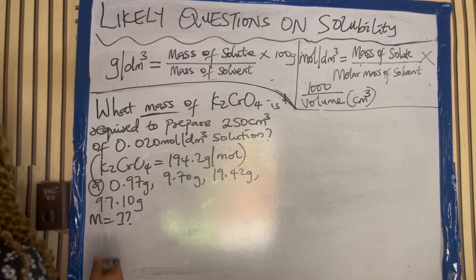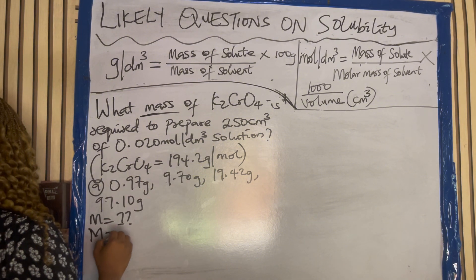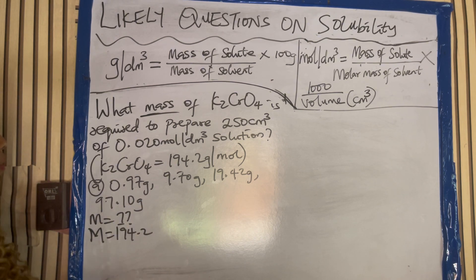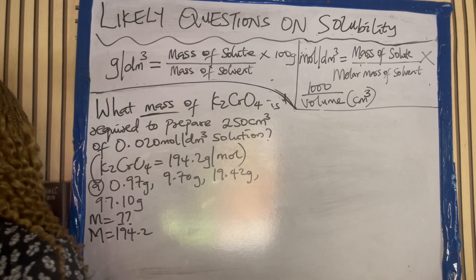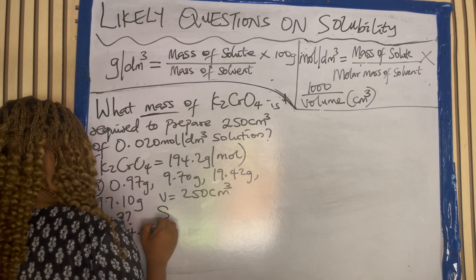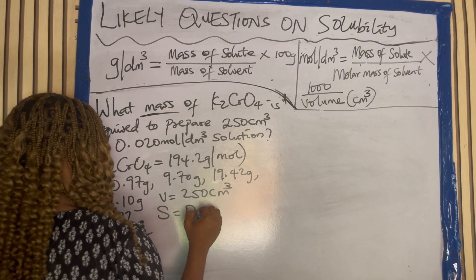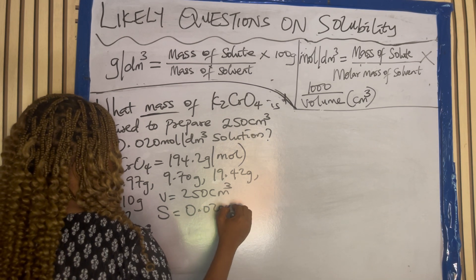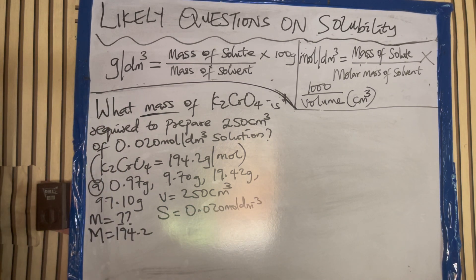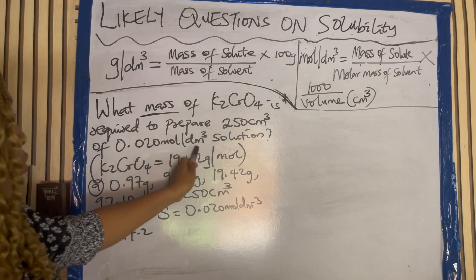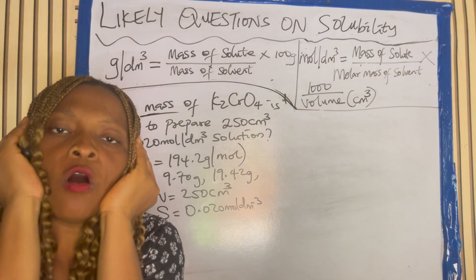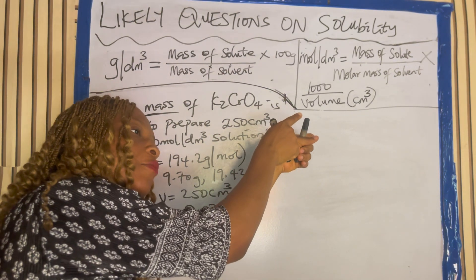We have been given the molar mass to be 194.2. We are given the volume to be 250 cm cube. And we are given the solubility to be 0.020 mole per dm cube. It's mole per dm cube — once you hear mole per dm cube, what comes to your mind? The second formula.